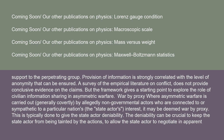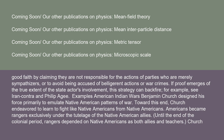Where asymmetric warfare is carried out, generally covertly, by allegedly non-governmental actors connected to or sympathetic to a particular nation's interests, it may be deemed war by proxy. This is typically done to give the state actor deniability — to keep the state from being tainted by the actions, to allow negotiation in apparent good faith, or to avoid being accused of belligerent actions or war crimes. If proof emerges of the true extent of the state actor's involvement, this strategy can backfire. For example, see Iran-Contra and Philip Agee.